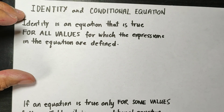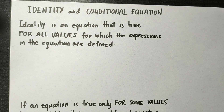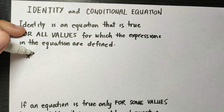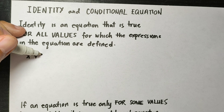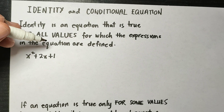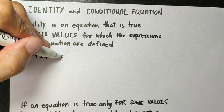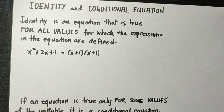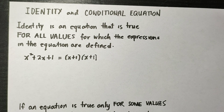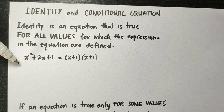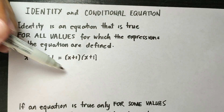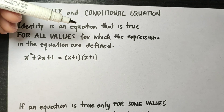Let me give examples. Let us start with the identity. For example, we have x squared plus 2x plus 1 equals x plus 1 times x plus 1. This is an identity because for whatever values of x, these expressions will always be equal to the value of the expressions on the other side.